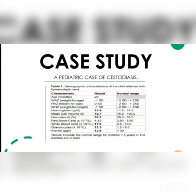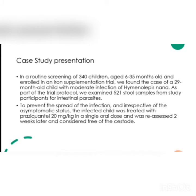The case study presented is of a 29-month-old child residing in Gambia, Africa, who was brought into hospital as part of a trial involving 340 child subjects ranging from 6 to 35 months in age. It was primarily an iron supplementation trial, but during fecal and stool testing, this 29-month-old child was found to have a moderate infection of Hymenolepis nana.